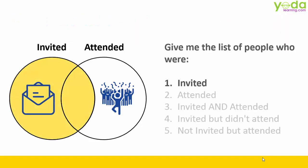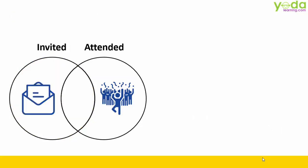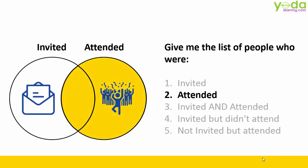First question: if I want to find out the list of those people who were invited, it does not matter whether they attended or not. In that case, we'll talk about Left Outer Join. Next, if I wish to talk about those people who actually attended the program, then I'll be talking about Right Outer Join. So I hope, in simple graphical terms, it's clear what is the difference between Left Outer and Right Outer Join.